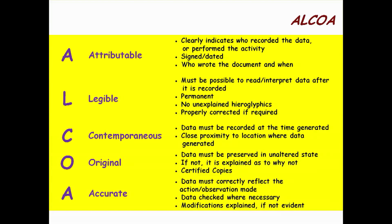Lastly, it has to be Accurate — it has to correctly reflect the action or observation made. The data has to be checked where necessary and modifications have to be explained if they are not evident. That doesn't mean every piece of data has to be checked. There are critical data elements and non-critical data elements. For training records, critical elements are the topic, who gave it, and when. The exact start and finish time to the second is not critical. There are many documents in our industry that really are not critical and don't need a second signature. First, look at your data and determine what is critical and what is not.